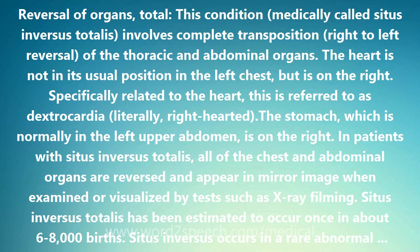The heart is not in its usual position in the left chest, but is on the right. Specifically related to the heart, this is referred to as dextrocardia — literally, right-hearted. The stomach, which is normally in the left upper abdomen, is on the right.